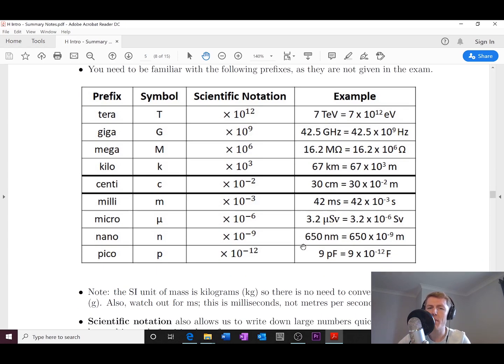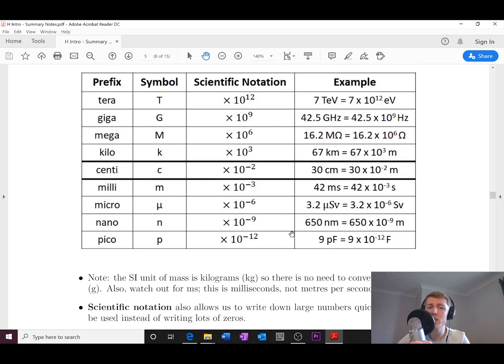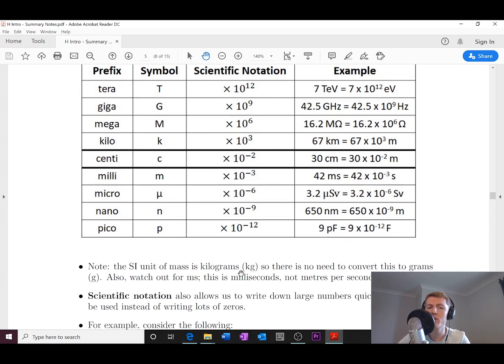Just a reminder that the SI unit that we saw on the previous page was kilograms for mass and not grams, so there's no need to convert this kilo part for the kilograms. Okay, we use kilograms all the time. And also watch out for ms. That's milliseconds, not meters per second. So just be aware of the slight difference between those two.